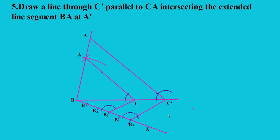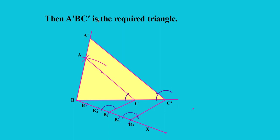Step 5: Draw a line through C' parallel to CA, intersecting the extended line segment BA at A'. Then triangle A'BC' is the required triangle.